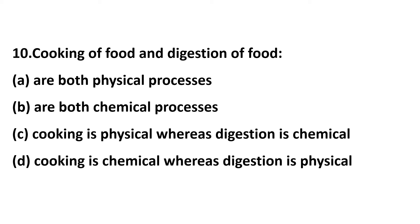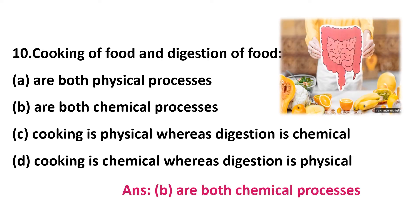Question 10: cooking of food and digestion of food — option A: both are physical processes, option B: both are chemical processes, option C: cooking is physical whereas digestion is chemical, option D: cooking is chemical whereas digestion is physical. A chemical process is where a substance is totally converted into a new substance. In cooking we add different substances and get a new substance. Digestion also converts substances. So both cooking and digestion are chemical processes.